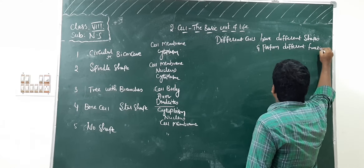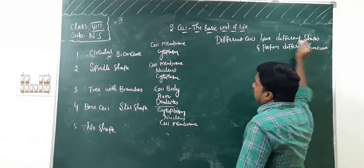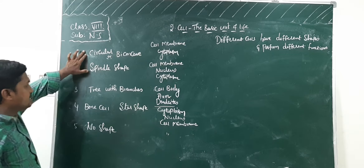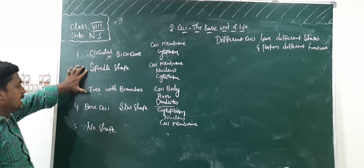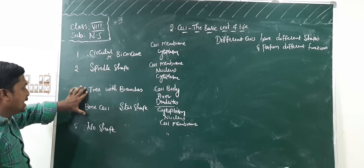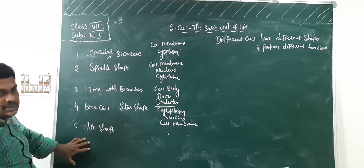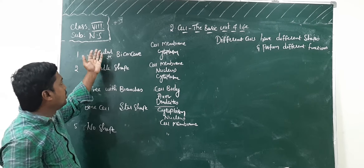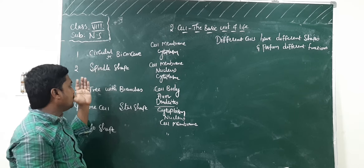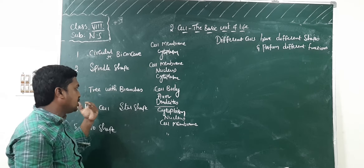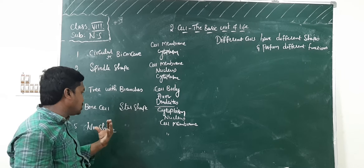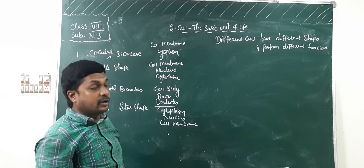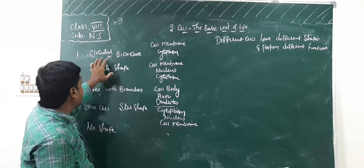All these are different cells — like red blood cells, muscle cells, nerve cells, bone cells, and white blood cells. They have different shapes: biconcave/circular shape, spindle shape, tree-with-branches shape, star shape. Functions also differ.